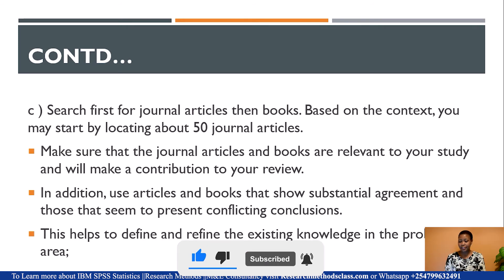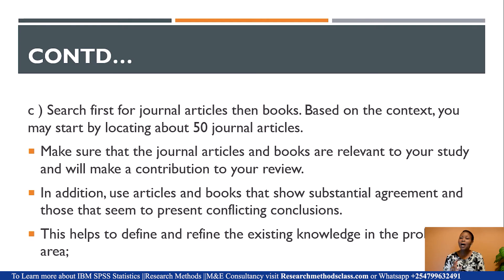Once you have done your searches, search first for journal articles before moving to books, because journal articles are original research. Based on the context, you may start by locating about 50 articles. When searching these articles, make sure they are relevant to your study and will make a contribution to your review. Also use articles and books that show substantial agreement and those that present conflicting conclusions, because that is how you will be able to put your voice in the literature and grow the body of knowledge.